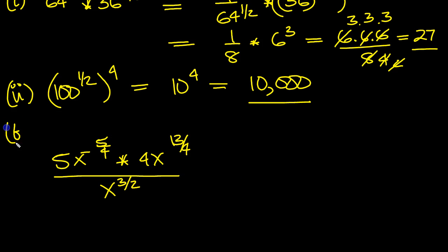So part B, part 1. So what have we got here? We've got times, so we can just times these. 5 times 4 is 20. And this times this, they're both x to a power, so times you add the powers. So 13 over 4 added to minus 5 over 4 is 8 over 4, which is 2, over x to the 3 over 2.